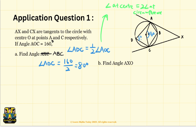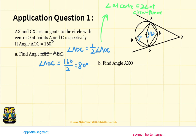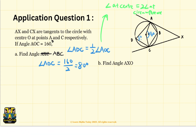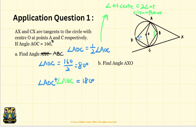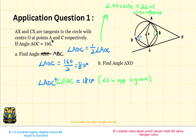We also know that angles in opposite segments sum to 180 degrees, meaning that angle ADC plus angle ABC equals 180 degrees. So angle ABC is 180 degrees minus 80 degrees, equal to 100 degrees.